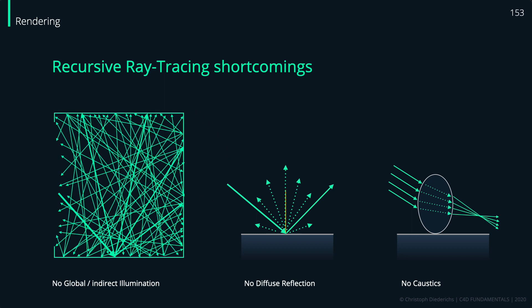What are the shortcomings of recursive ray tracing? We already talked about global illumination — the scattered light in an interior scene giving a nice light distribution. Recursive ray tracing doesn't handle that. Also, we can only render specular reflections. If a material is diffuse and rough rather than glossy, we can't render that diffuse reflection because we only shoot one reflection ray.